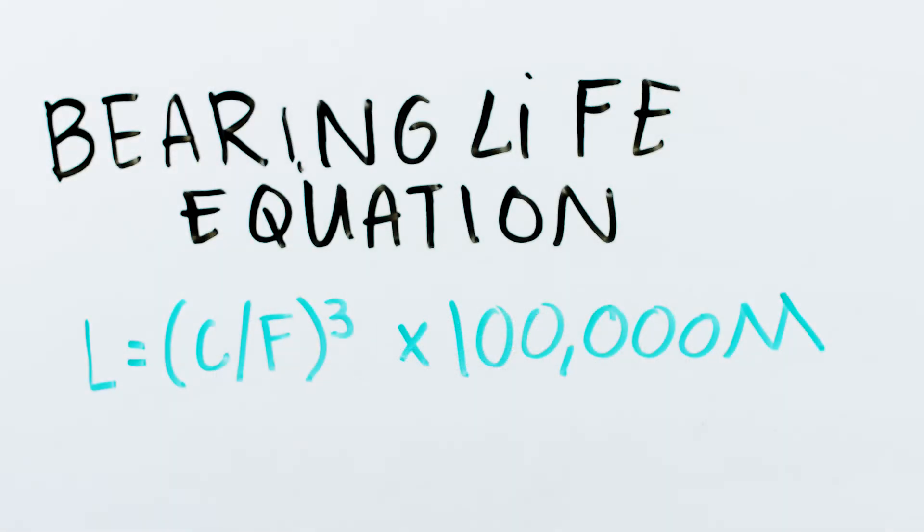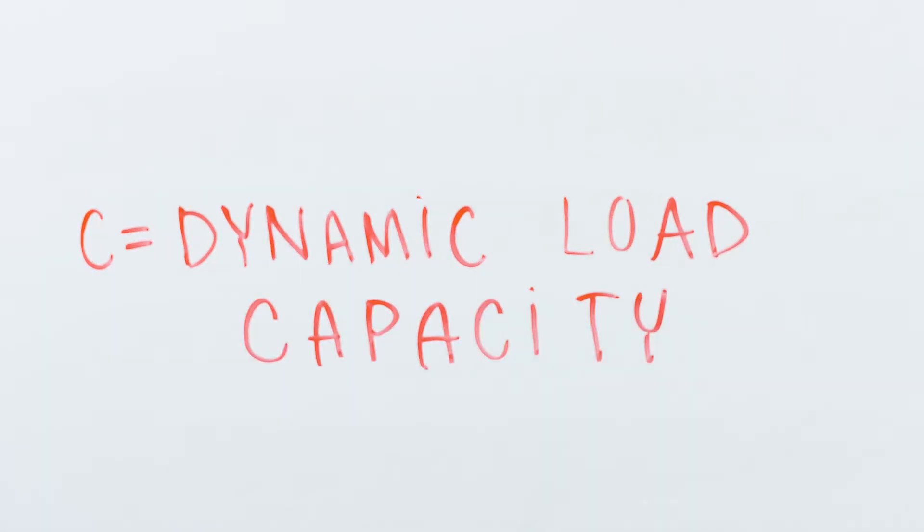In this equation, C is the dynamic load capacity of the linear bearing. This is important because it means you have to make a preliminary bearing selection in order to know the dynamic load capacity.